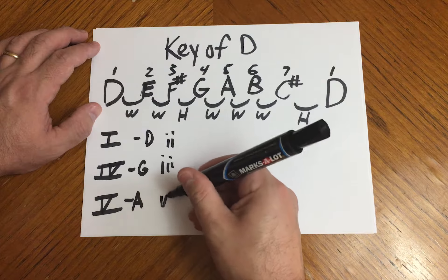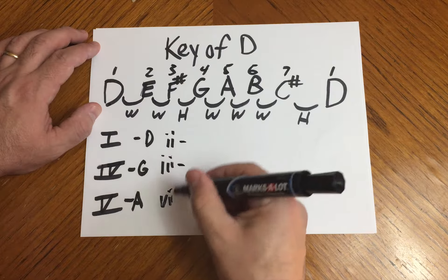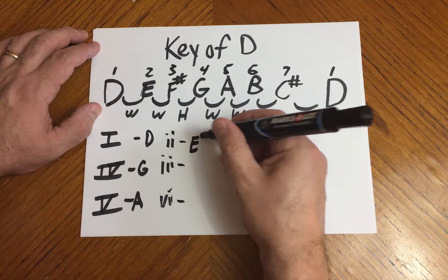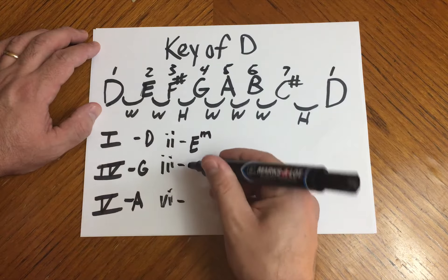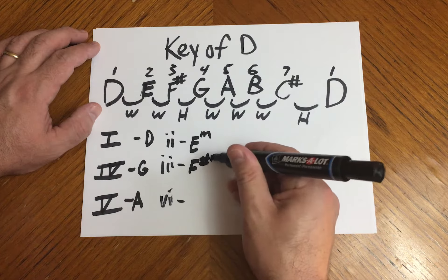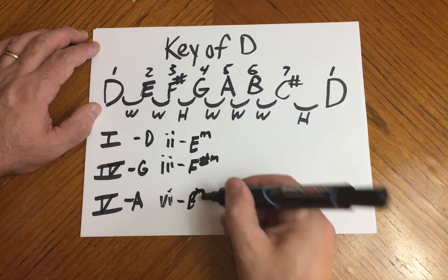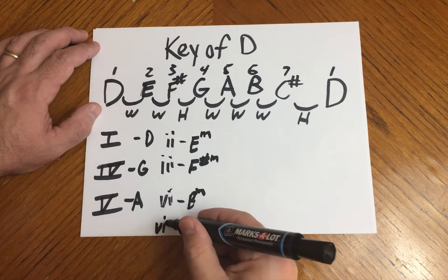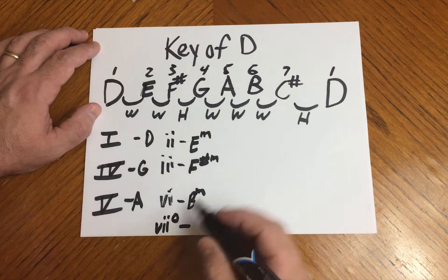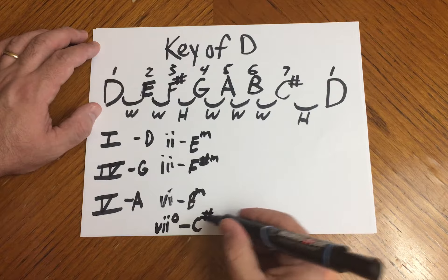And then we said the 2, the 3, and the 6 are minor, which gives us E minor, the 3 is F sharp minor, and the 6 is B minor. And then the 7 is a diminished chord, so in the key of D we have a C sharp diminished chord.